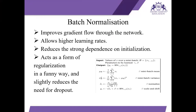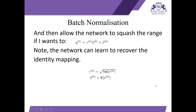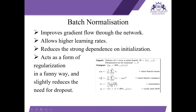So what does batch normalization do? It improves the gradient flow through the network, it allows higher learning rates, it reduces strong dependence on initialization, and it acts as a form of regularization — slightly reducing the need for dropout. The steps are: compute mini-batch mean, mini-batch variance, normalize, then scale and shift. Thank you.